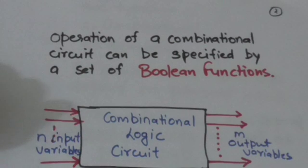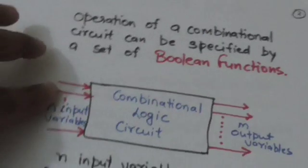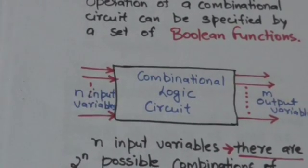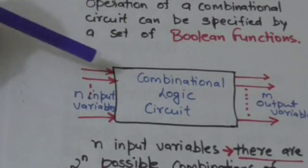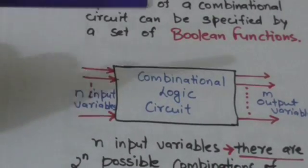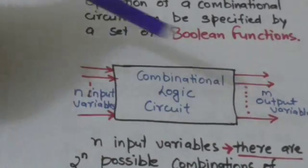Operation of a combinational circuit can be specified by a set of Boolean functions. Look at this logic diagram of a combinational logic circuit. Combinational logic circuits consist of logic gates, input variables, and output variables. Here there are n input variables and m output variables.